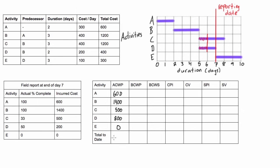Adding up these numbers, the total ACWP to date is $2,700. Next is the budgeted cost of work performed (BCWP) — this is how much money we were expecting to pay for the amount of work that was actually completed. We completed 100% of activity A and planned it to cost $600, so the BCWP for activity A is $600.